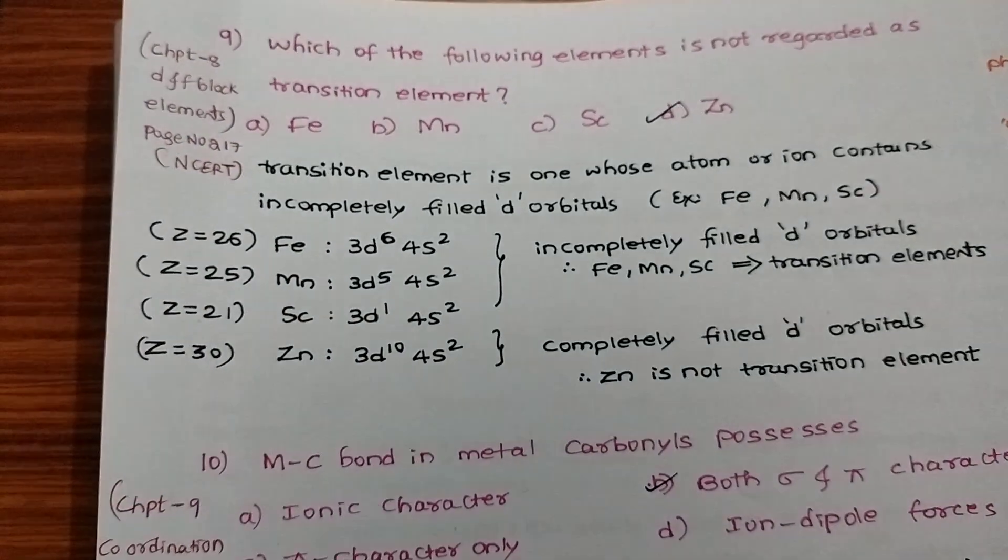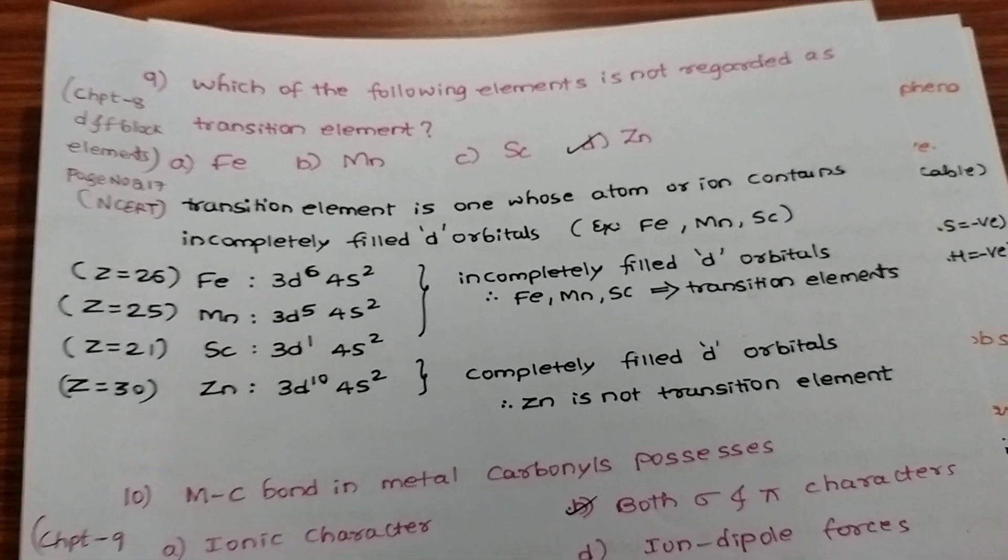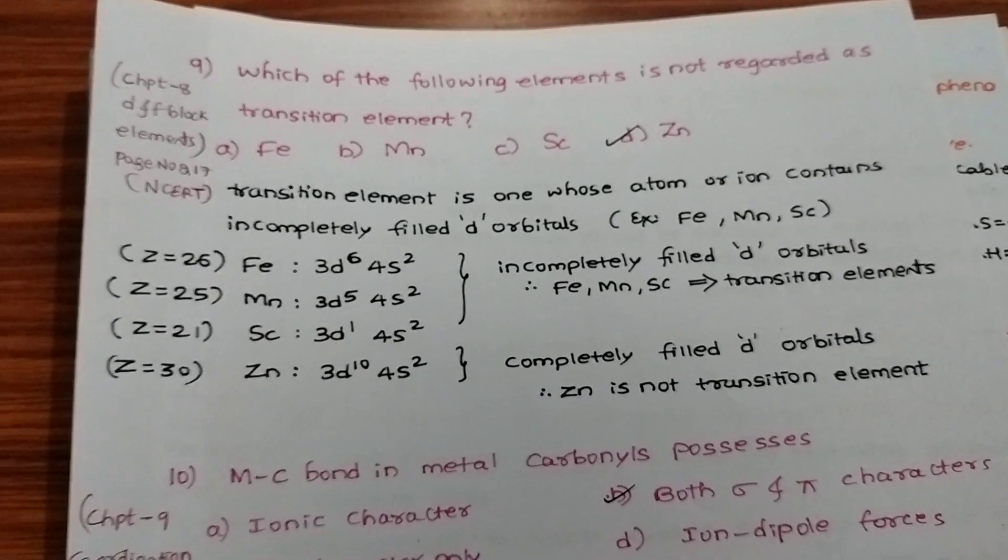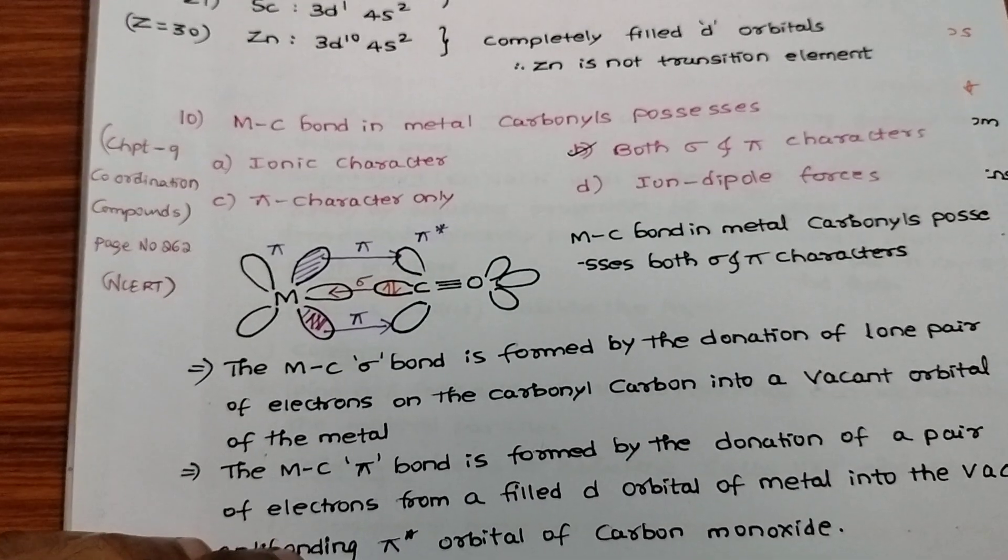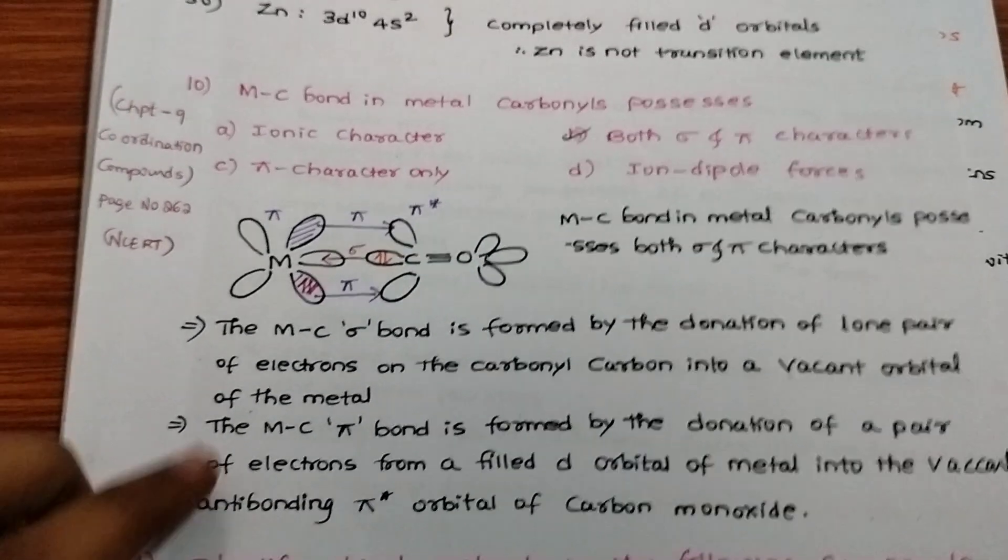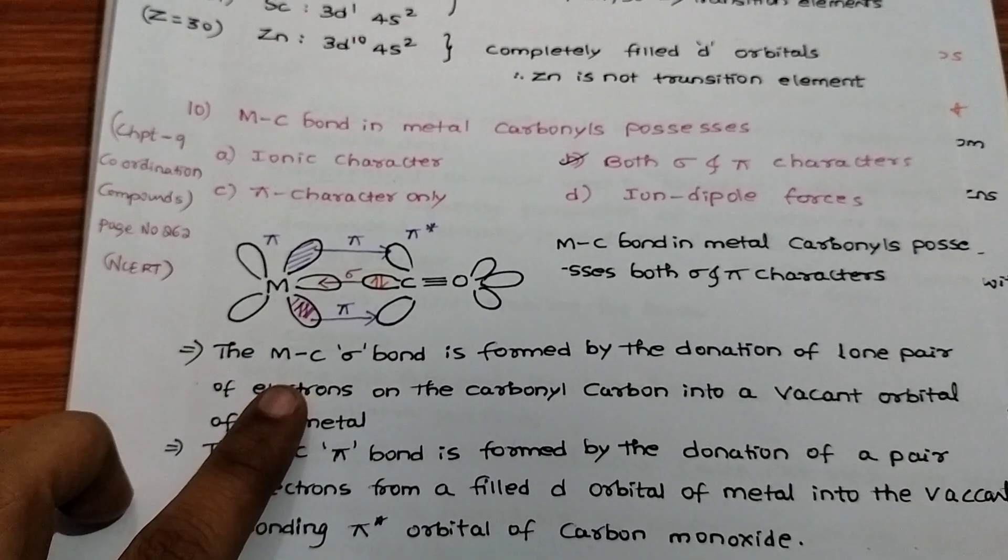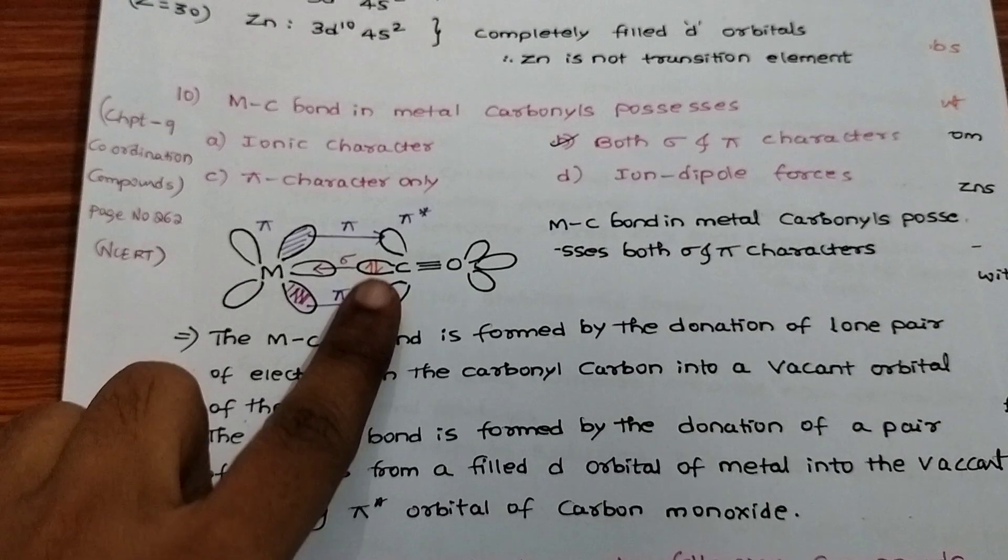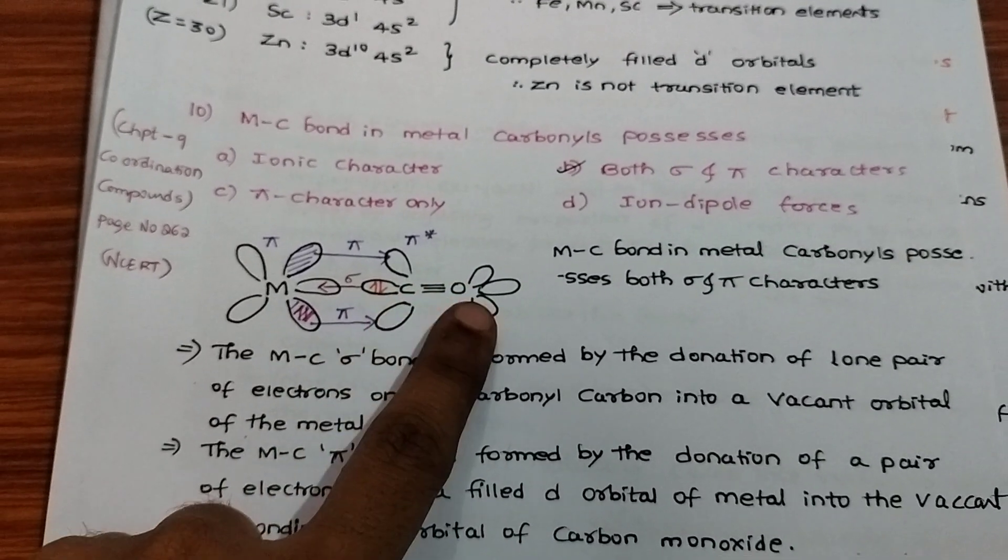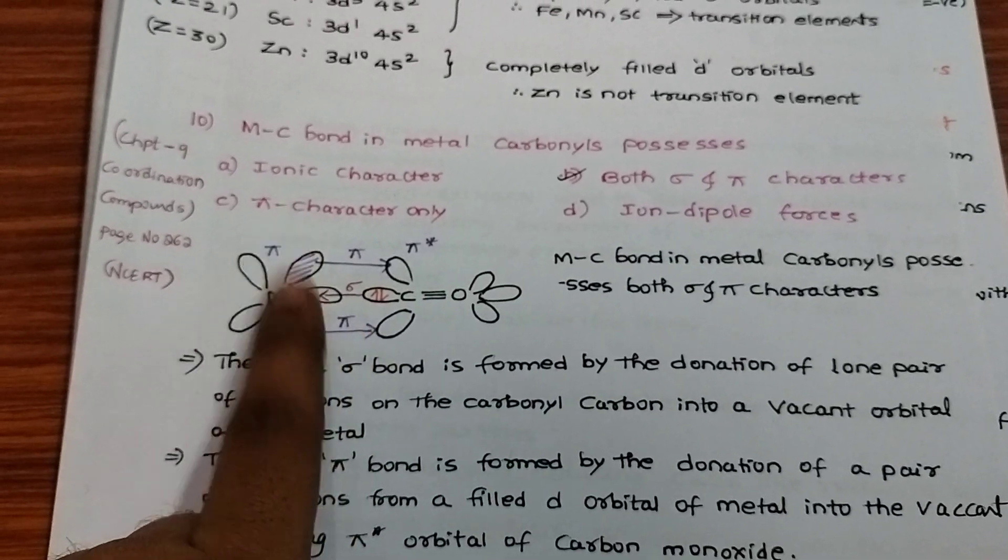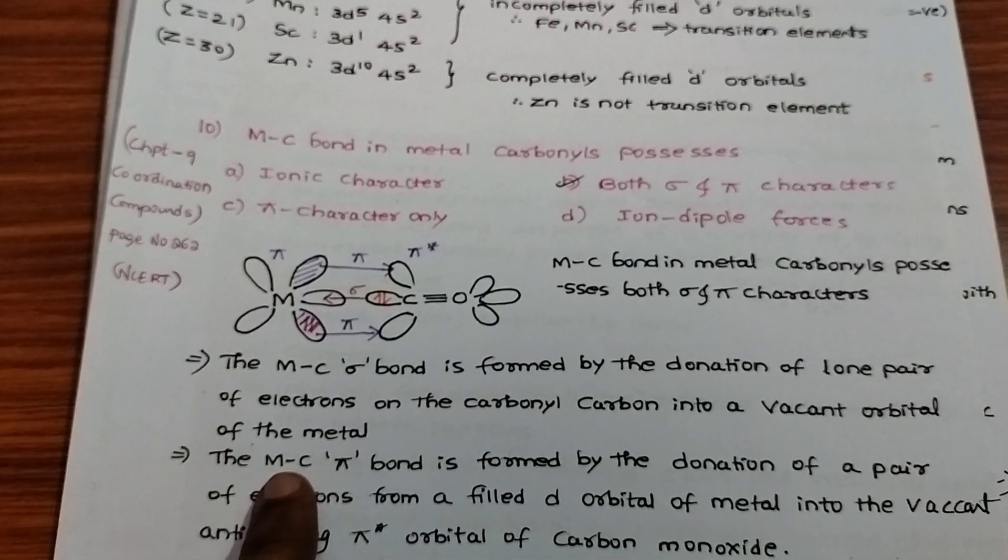Zinc has completely filled d orbitals, therefore it is not a transition element. Remaining three options have incompletely filled d orbitals, so they are transition elements. Metal-carbon bond in metal carbonyls possesses both sigma and pi characters. Metal to carbon sigma bond is formed by donation of lone pair of electrons from carbonyl group into vacant d orbitals of metal.